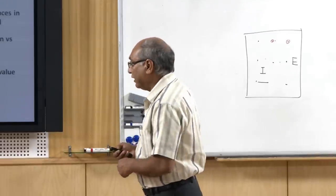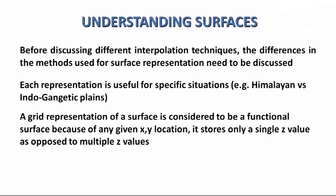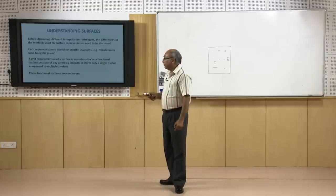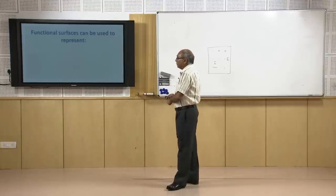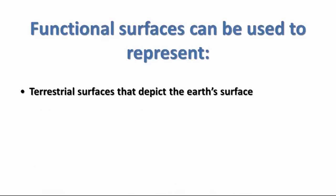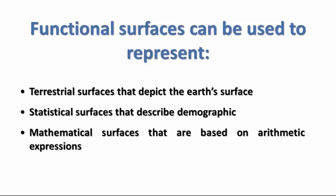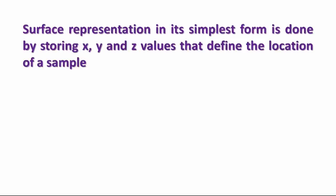In grid representation as a raster, you have XY locations and a Z value — that is your single attribute in raster — which can be elevation, concentration, depth, or height. These functional surfaces are continuous, not discrete. They can represent terrestrial surfaces depicting terrain conditions, or be used as statistical surfaces describing demographic or mathematical representations based on arithmetic expressions.